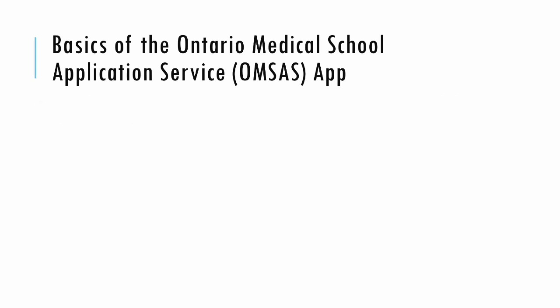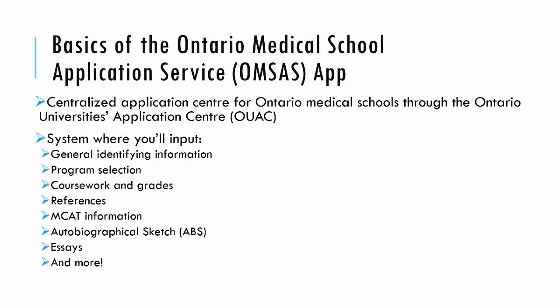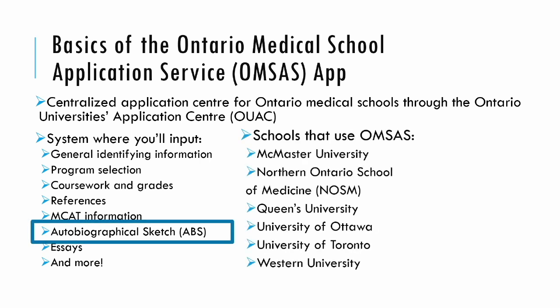So what is OMSAS? It's a centralized application center for Ontario medical schools through the Ontario Universities Application Centre. You may be familiar with it if you've applied to Ontario universities before. Through OMSAS you input identifying information, program selection, coursework and grades, references, MCAT information, the ABS, essays, and more. You can apply to all Ontario medical schools including McMaster, NAWS, Queen's, uOttawa, U of T, and Western. In terms of which ones use the ABS, it's basically all of them except McMaster.